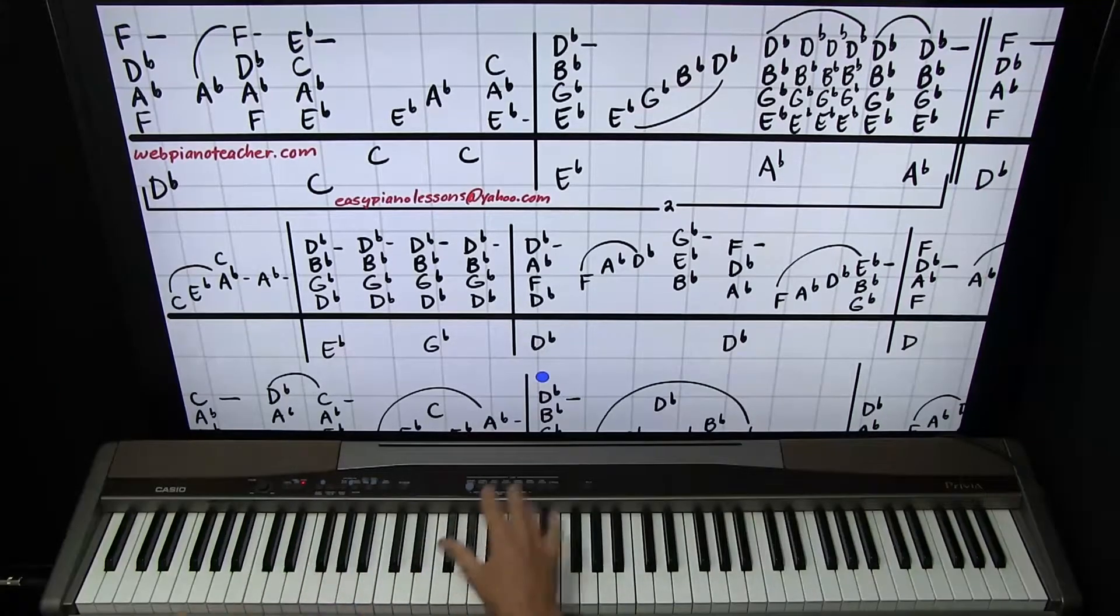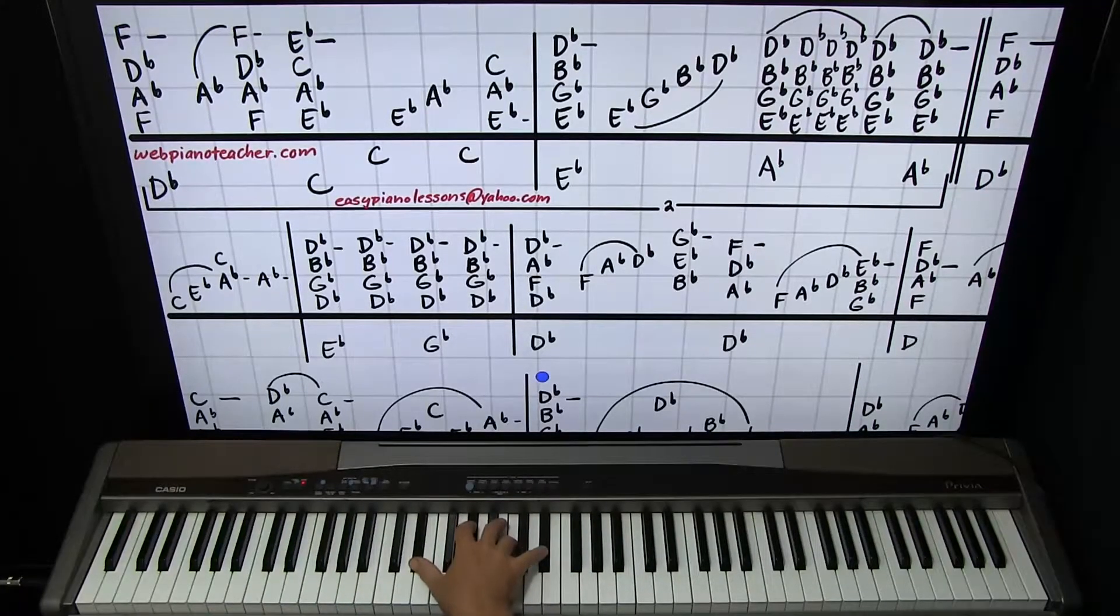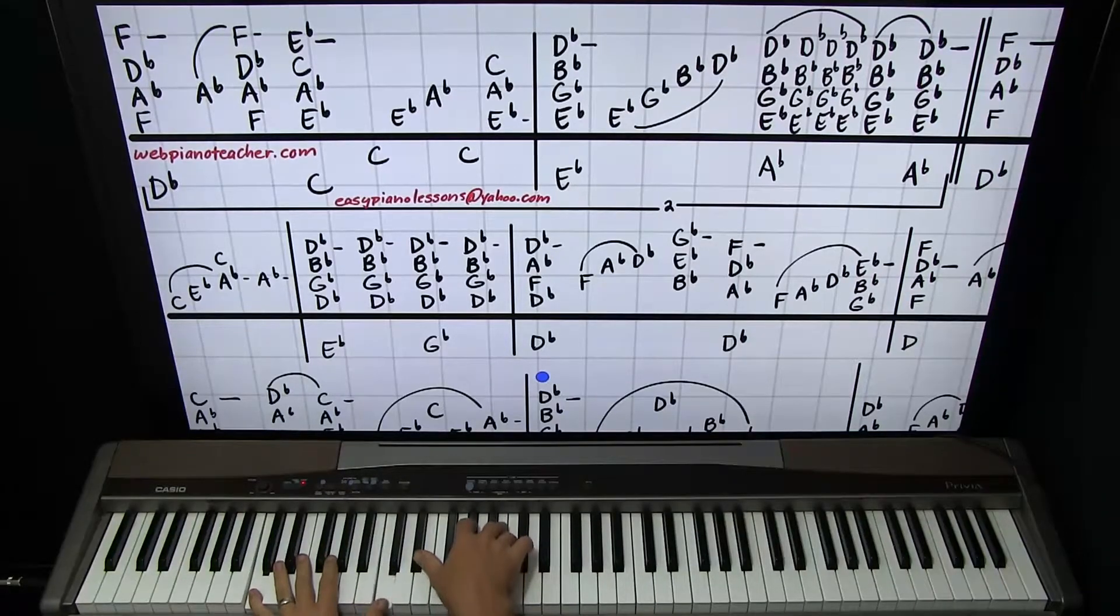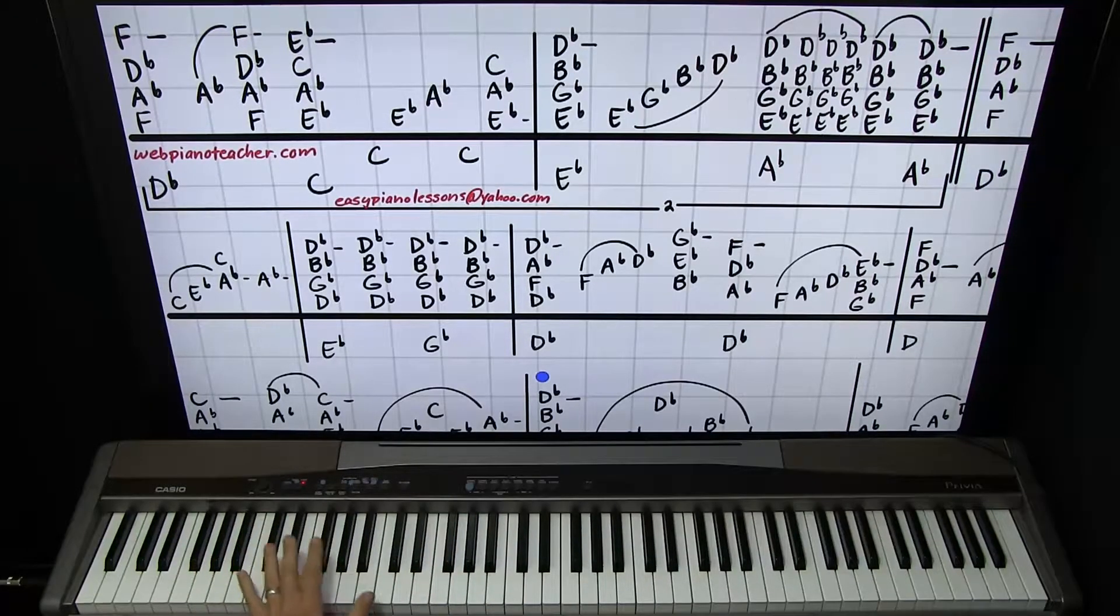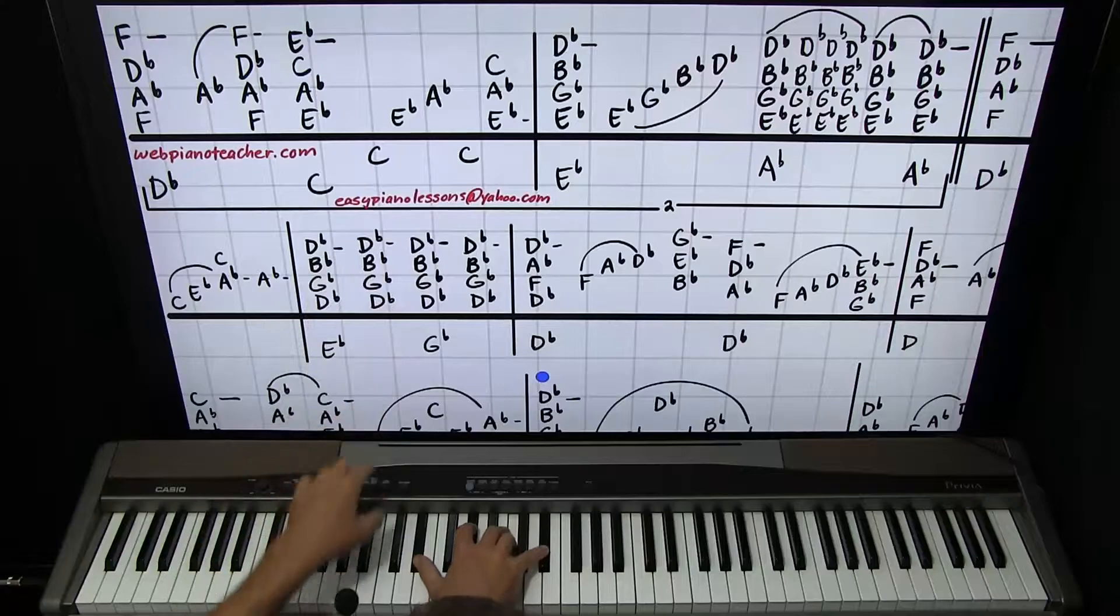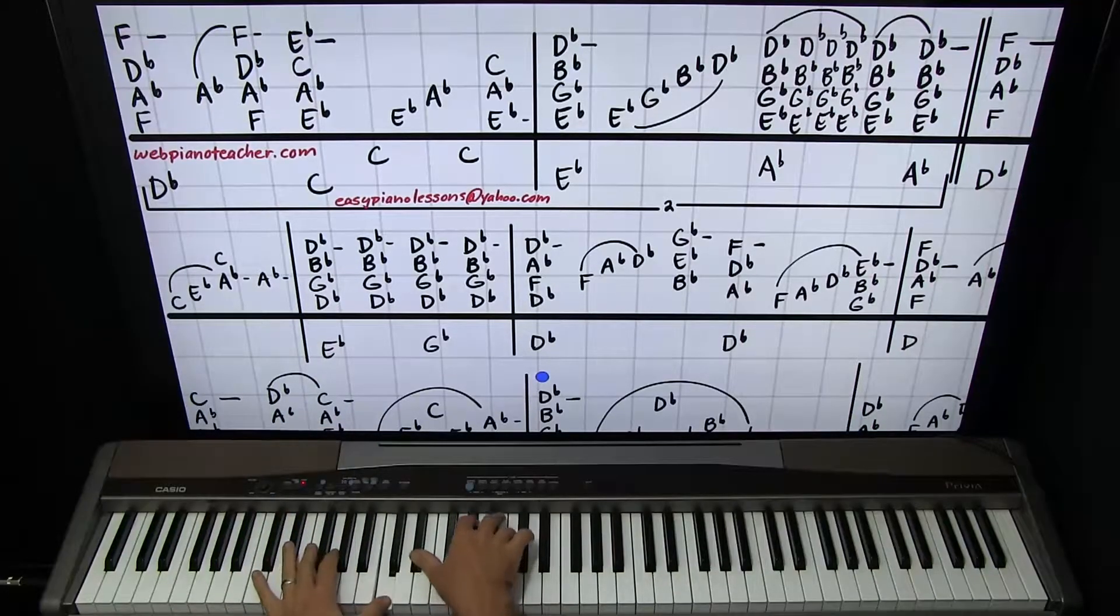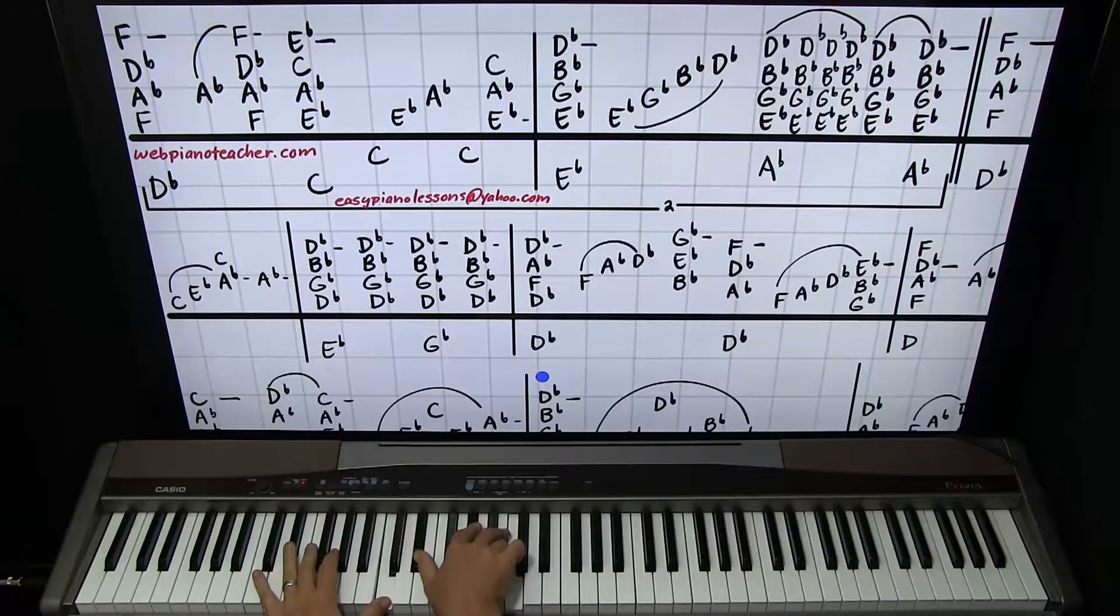Then we'll go to an A flat chord. E flat, A flat, C, E flat, left hand on a C octave. So I'm going to play the same notes I'm already holding down. Right here. C, E flat, A flat, C. Then the chord. E flat, A flat, C.